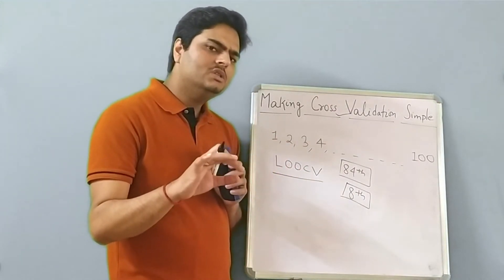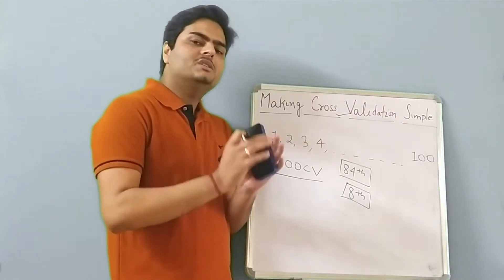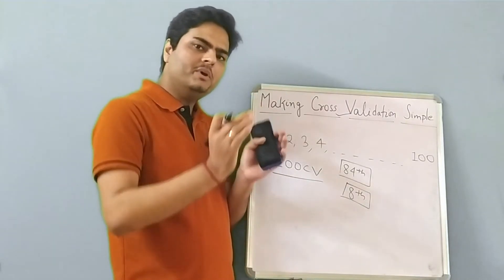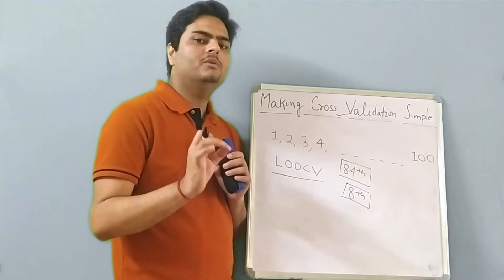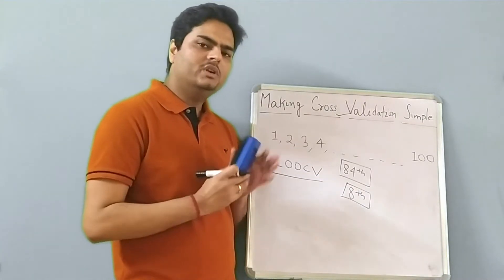So what LOOCV is solving is it is considering all the data. It is learning pattern from almost all the data, but it suffers the problem of high variance. What is the next approach?